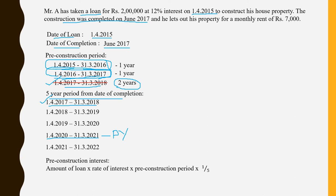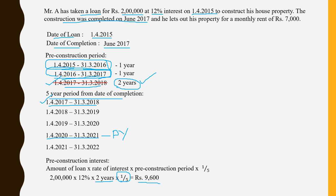The formula is: Amount of loan × Rate of interest × Pre-construction period × 1/5. Substituting values: the loan amount is Rs. 2 lakhs, rate of interest is 12%, and the pre-construction period is 2 years. We multiply by 1/5 because the pre-construction interest can be claimed over 5 subsequent years, not as a single installment. The answer is Rs. 9,600, which is the pre-construction interest for the current previous year.